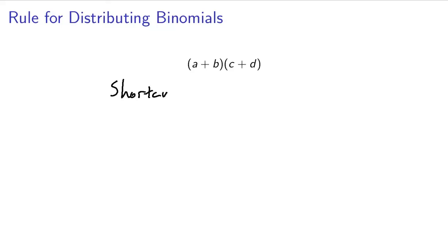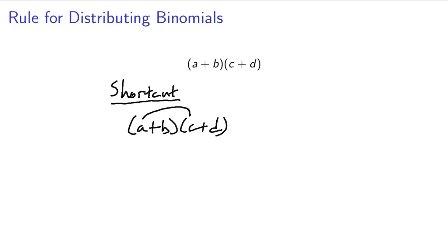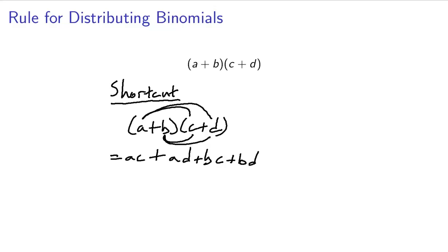The shortcut: if we have a plus b times c plus d, this a goes to the c and the a goes to the d, giving us a times c plus a times d. Then the b goes to the c and the b goes to the d, giving us plus b times c plus b times d. This is the expanded form of the binomial when we multiply them out.